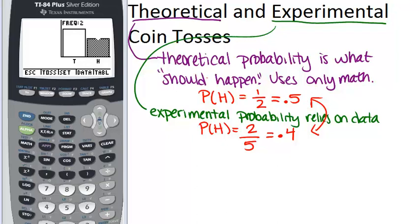So I would expect, as we increased the number of times we tossed this coin, that our probability for heads would get closer and closer to 0.5. So that's how you can use your calculator to simulate tossing a coin, and a brief introduction to the difference between theoretical probability and experimental probability.